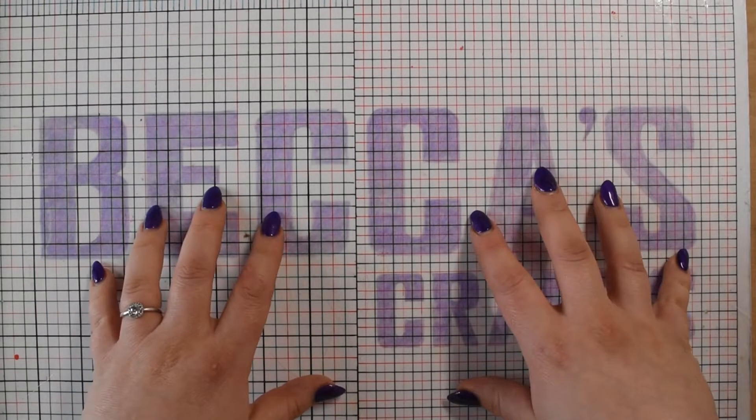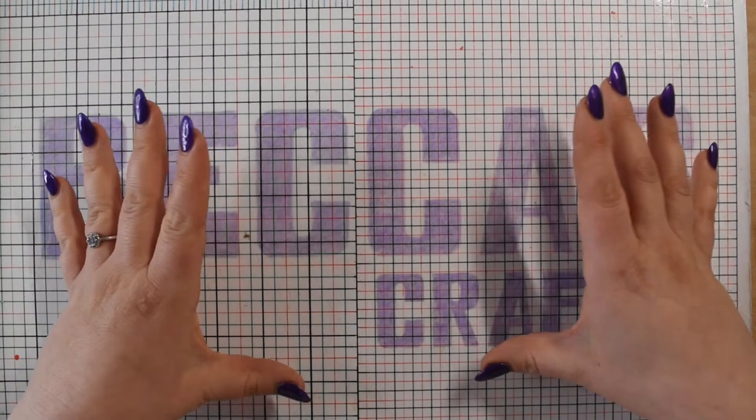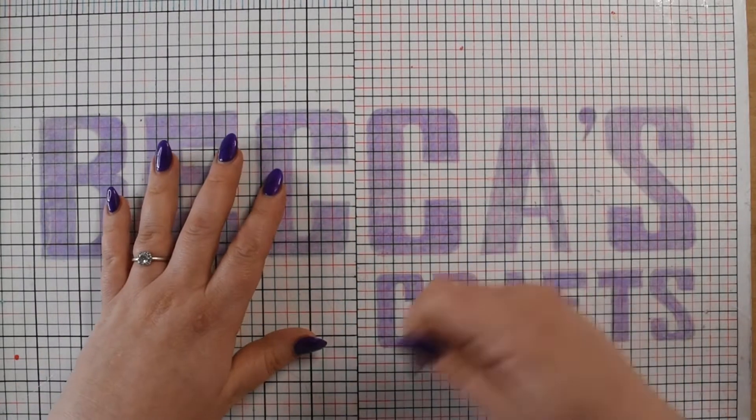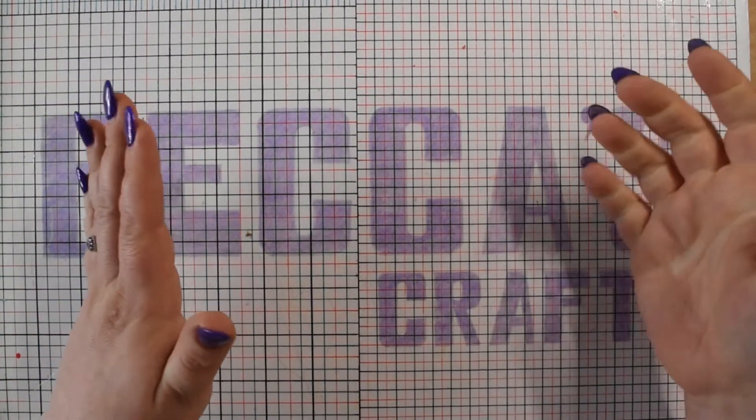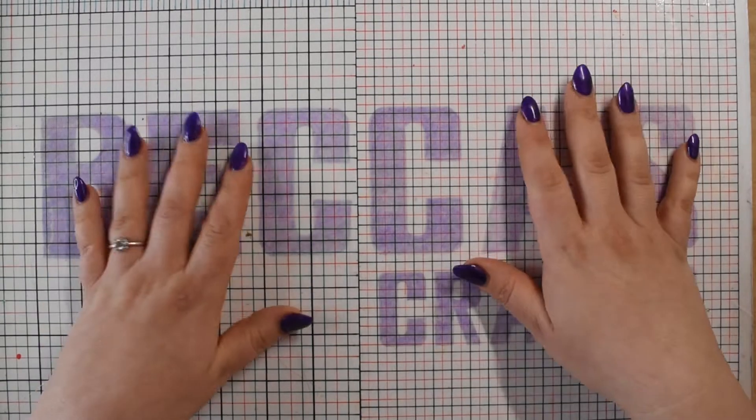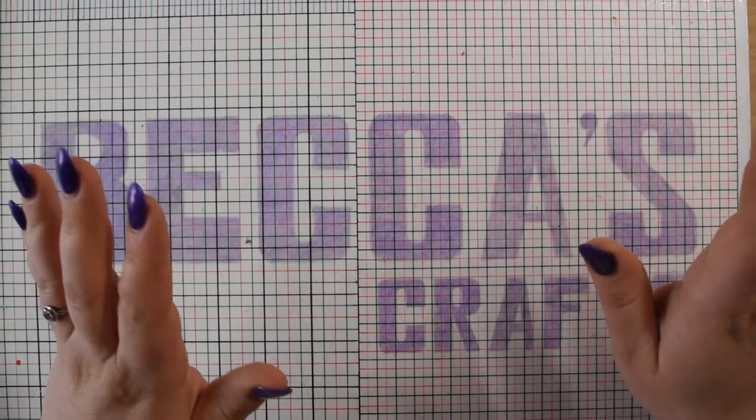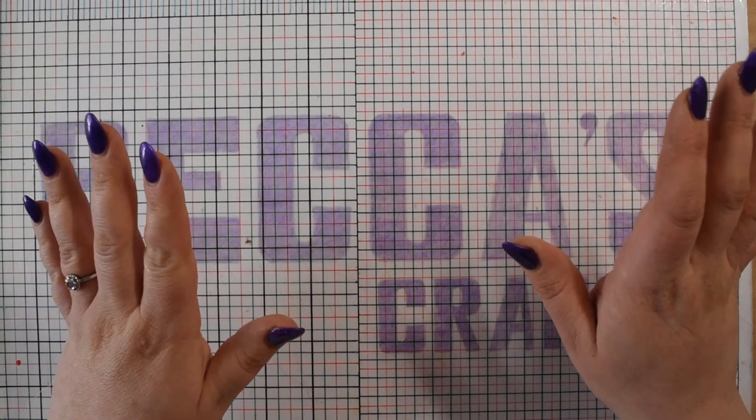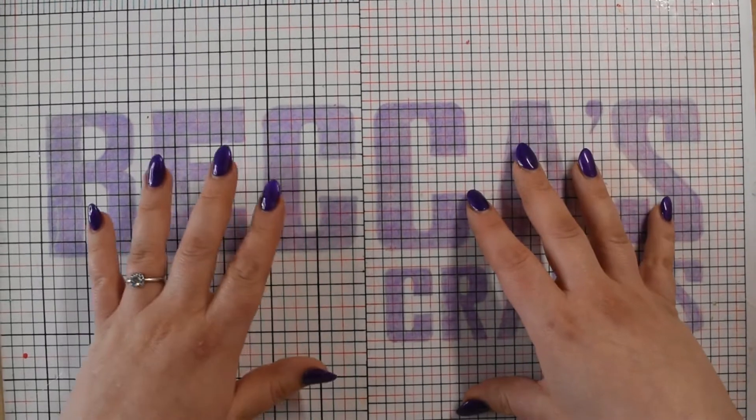When I first started using this, I had a glass cutting mat. It was an old chopping board that I'd peeled the back off of. The rubber feet came off eventually because I've been using it that much, and I just put it over the top of this.